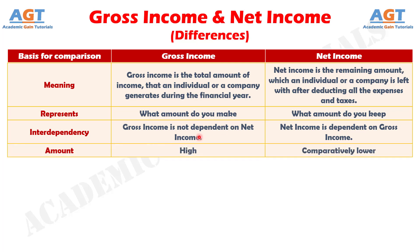Difference number 4: gross income is always higher than the net income. This is because the net income arrives after all adjustments and appropriations from gross income.